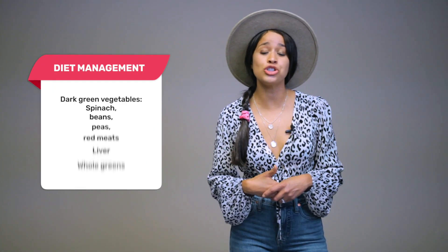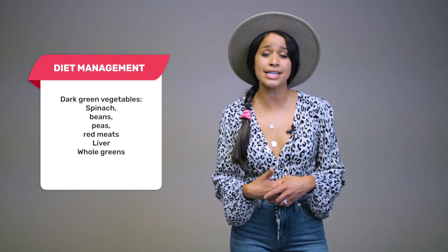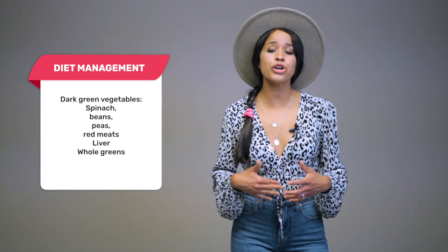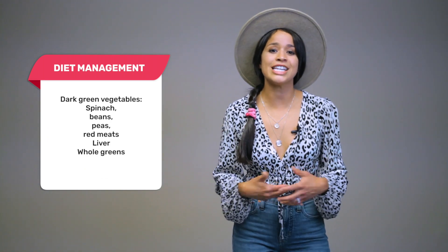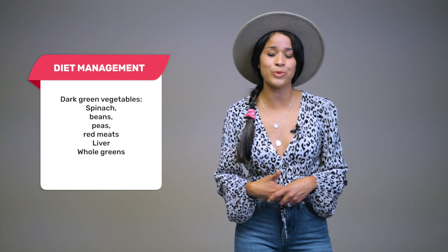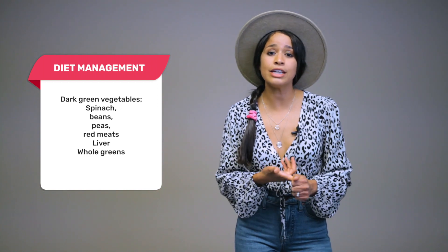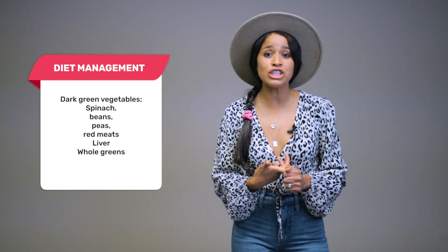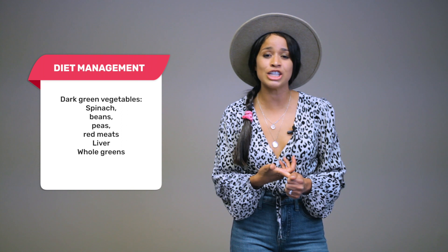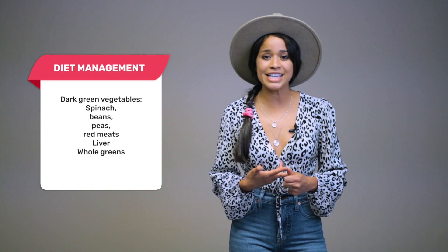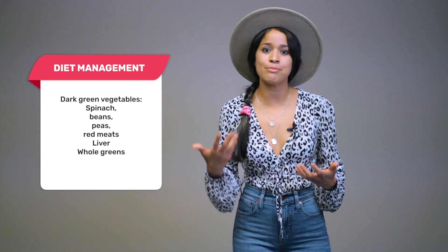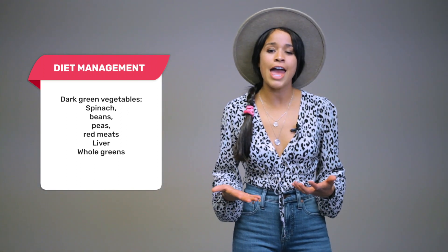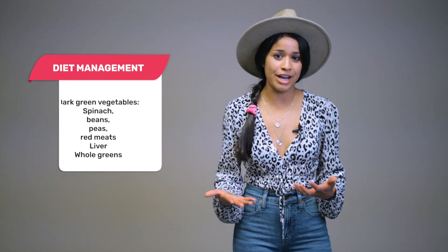Moving on to diet management — encourage your patient to eat foods high in iron. That would include leafy green vegetables such as spinach, beans, peas, some red meats including liver, and whole grains. Thank you so much for watching. Be sure to subscribe for upcoming notifications. Take care.